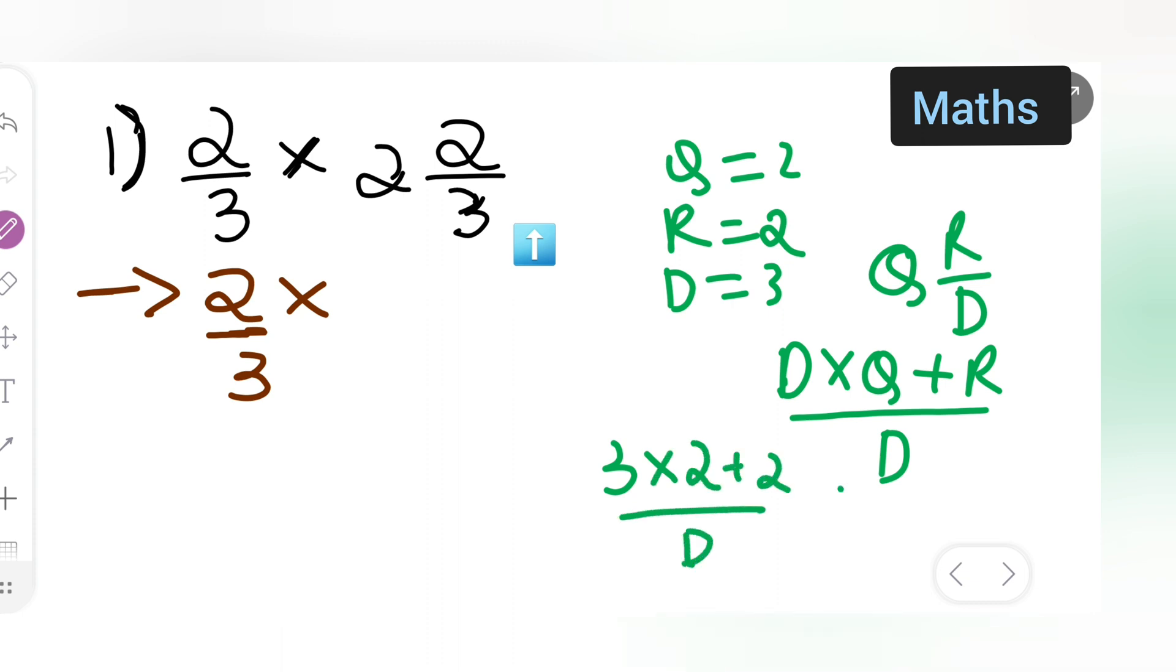You are going to get 3 times 2 are 6 plus 2 is 8. Here, you all have to multiply this. 3 times 2 are 6 plus 2, 8. So you will get 8 upon 3. It is 8/3, basically. You all have to write down 8/3.